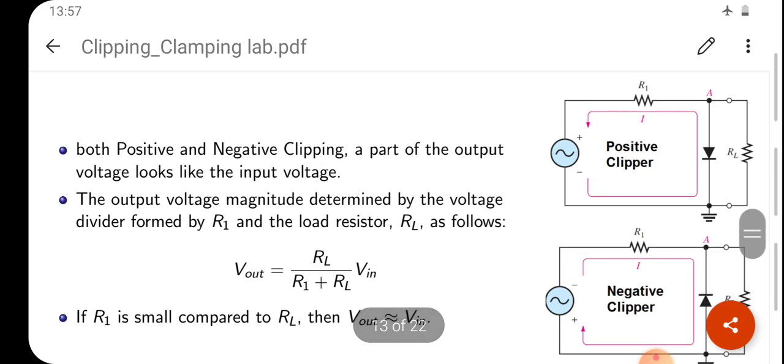Let us see both positive and negative clipping. A part of the output voltage looks like the input voltage that you have seen in the waveforms. Here is the diagram of positive clipper and also the diagram of negative clipper. From the diagram, output voltage is taken across the resistor RL.